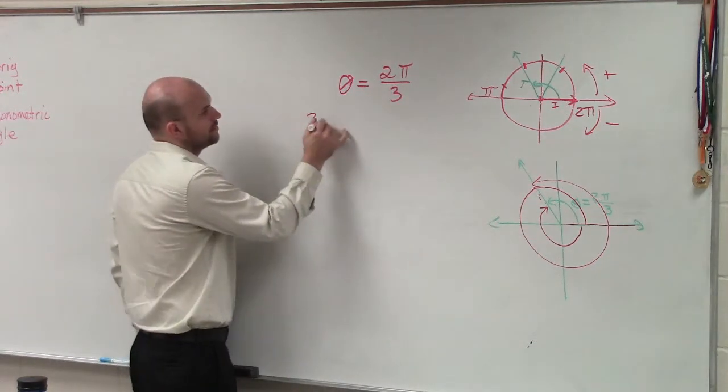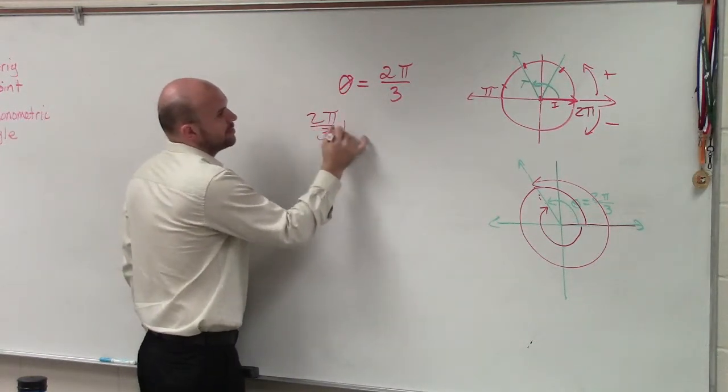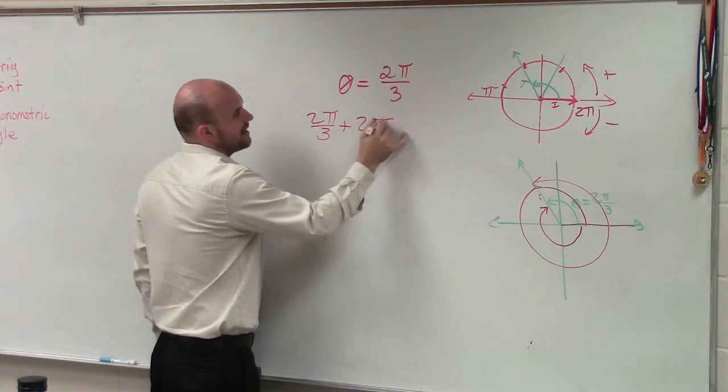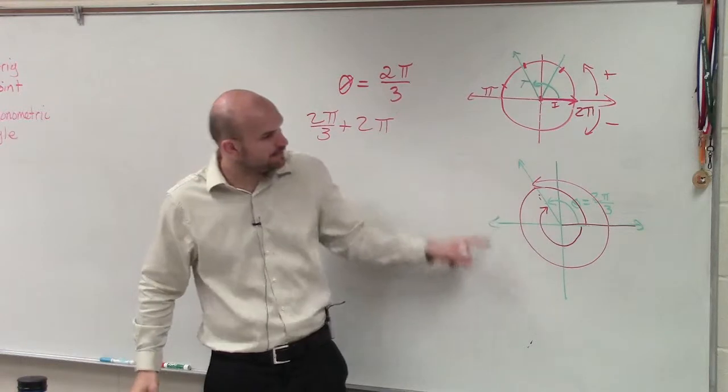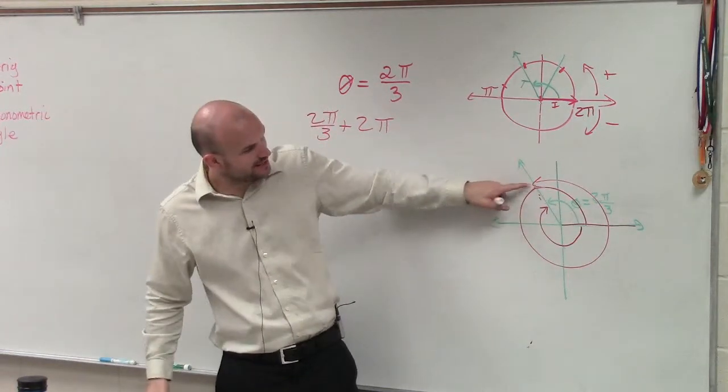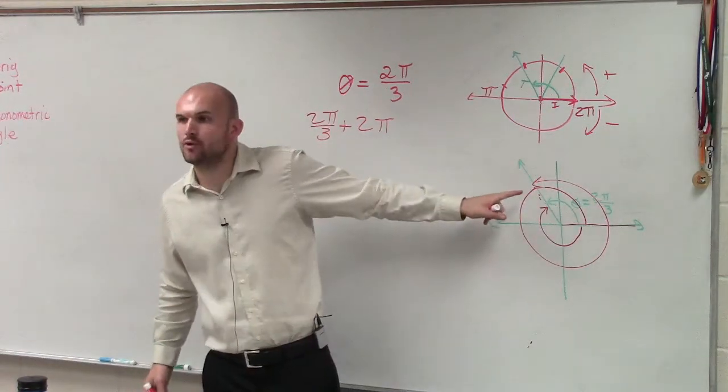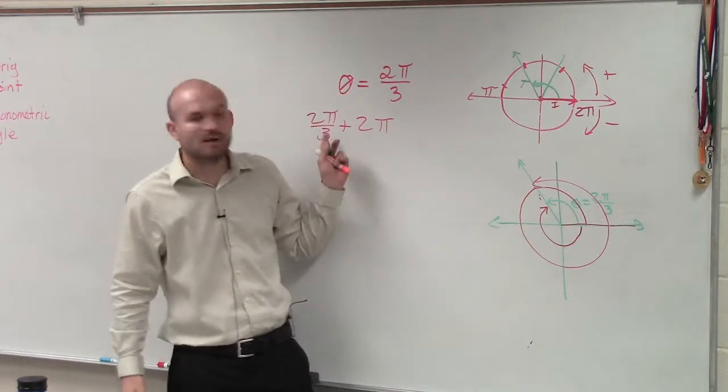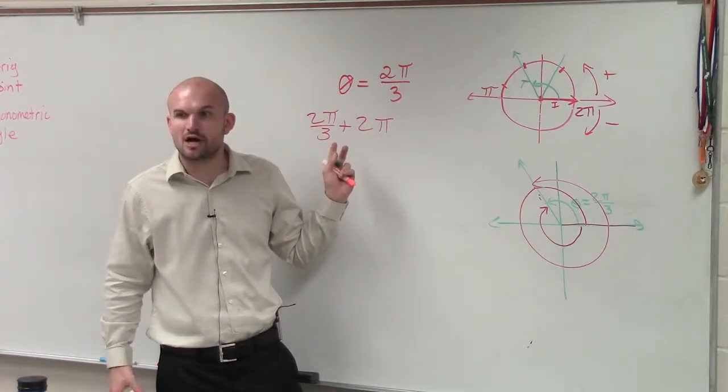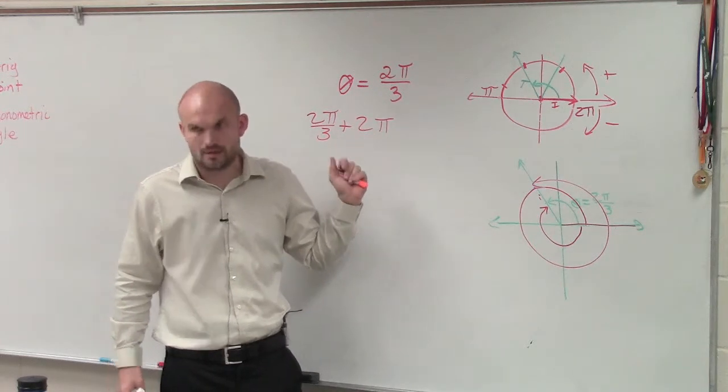So remember, if we start here and go to here's pi, then going all the way around would be 2 pi. And then really what it is is I went around 2 pi. And then how much farther do I have to go to get to my terminal side? 2 thirds. So what I did is I take 2 pi over 3 plus 2 pi. So pretty much what I did is I took this angle and I added a revolution. Because from here back to here is a whole revolution around the circle. Does that give me the same terminal side? Yes, it does.